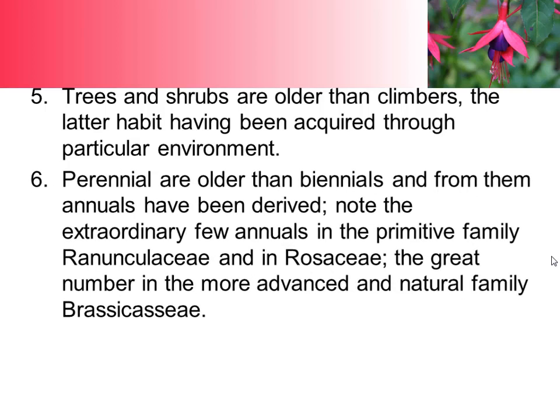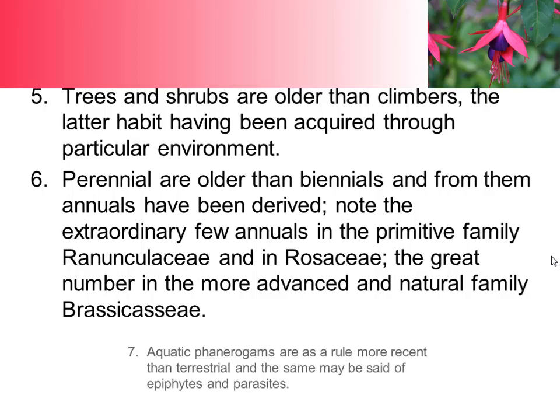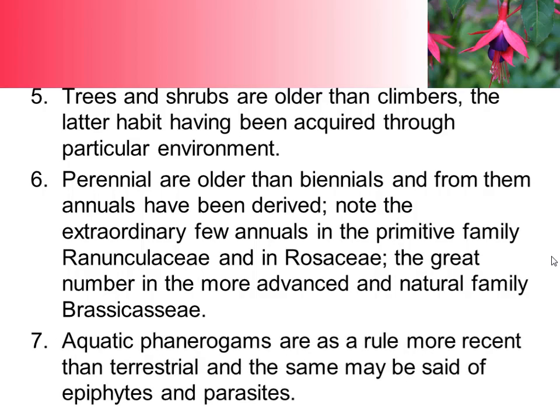Perennials are older than biennials — plants that grow for many years are the oldest characteristic. Annuals have been derived from perennials. Note the extraordinary few annuals in the primitive family Ranunculaceae, and in Rosaceae the great number in the more advanced family. Aquatic phanerogams are as a rule more recent than terrestrial plants, and the same may be said of epiphytes and parasites.